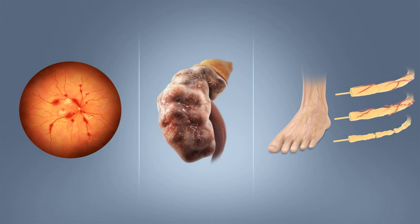Diabetes mellitus, commonly known as diabetes, is a group of metabolic disorders characterized by high blood sugar levels over a prolonged period. Symptoms of high blood sugar include frequent urination, increased thirst, and increased hunger.